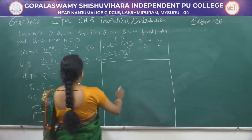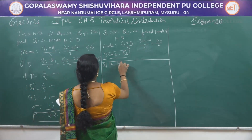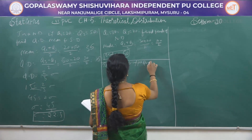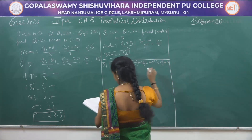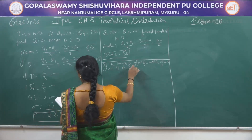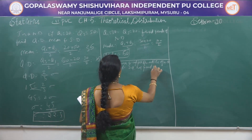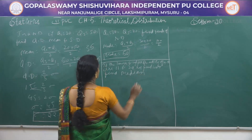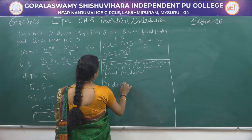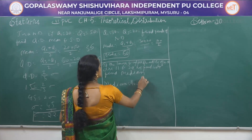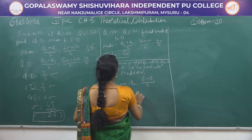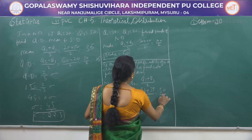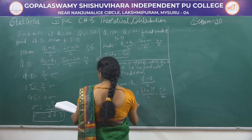If the lower and upper quartiles of a normal distribution are 11 and 39 respectively, find the median. Median = Q2 = (Q1 + Q3) / 2 = (11 + 39) / 2 = 50 / 2 = 25. So median = 25.